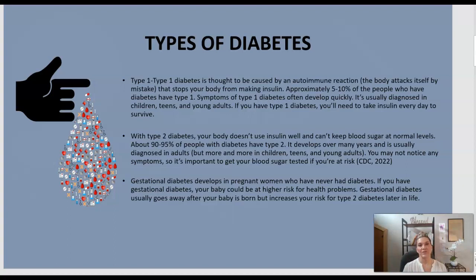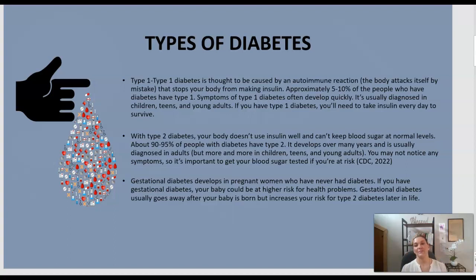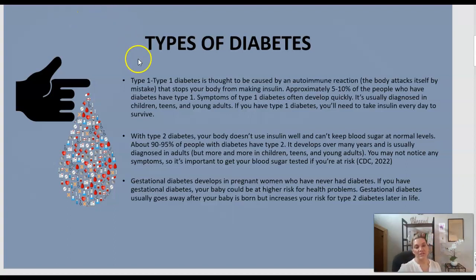With type 2 diabetes, the body doesn't use insulin well and can't keep blood sugars at a normal level. About 90 to 95 percent of people with diabetes have type 2, which usually develops in later adulthood and is associated with poor lifestyle choices. There is also gestational diabetes, which develops in pregnant women who had never been diagnosed with diabetes prior to being pregnant.